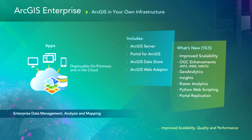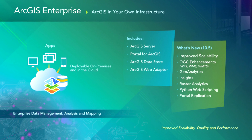Now there's ArcGIS Enterprise, which includes four different components: ArcGIS Server, Portal for ArcGIS, the ArcGIS Data Store, and the ArcGIS Web Adapter. We've got new capabilities at 10.5 — improved scalability, new applications, geoanalytics, insights for ArcGIS, new capabilities inside Image Server called raster analytics, portal replication, Python web scripting, and so forth. You're going to see a lot of these things later today.